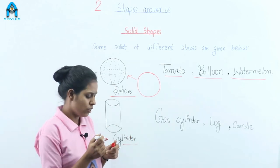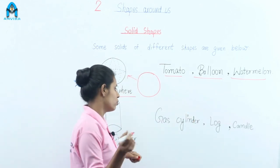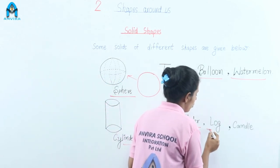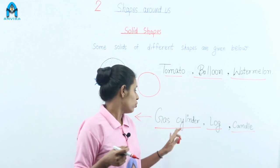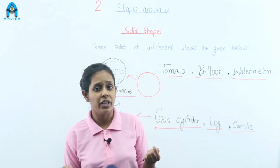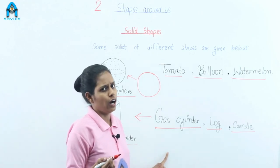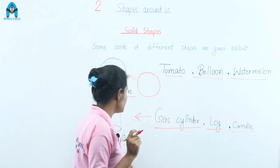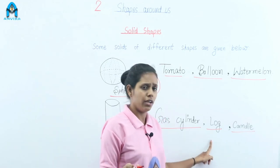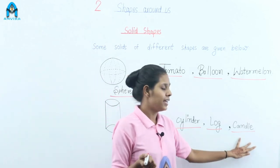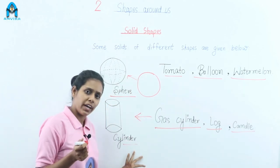Next is a cylinder. In our daily life, we see many things shaped like a cylinder — a gas cylinder, a log, a candle. Also, the rolling pin our mother uses to make chapati is also the shape of a cylinder.